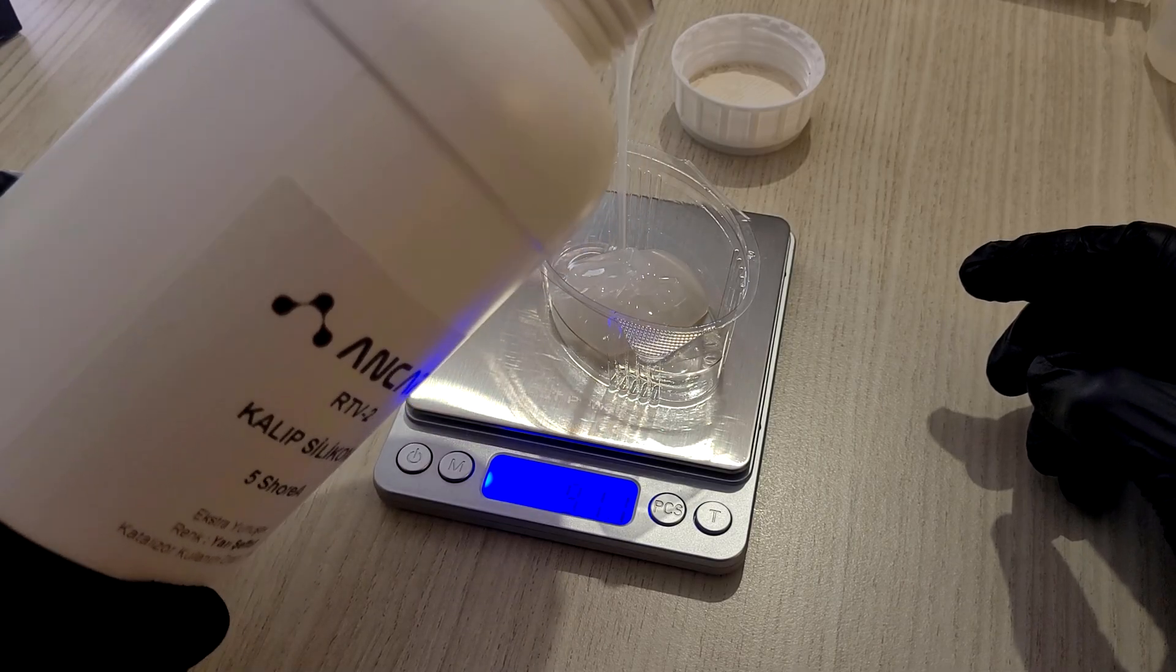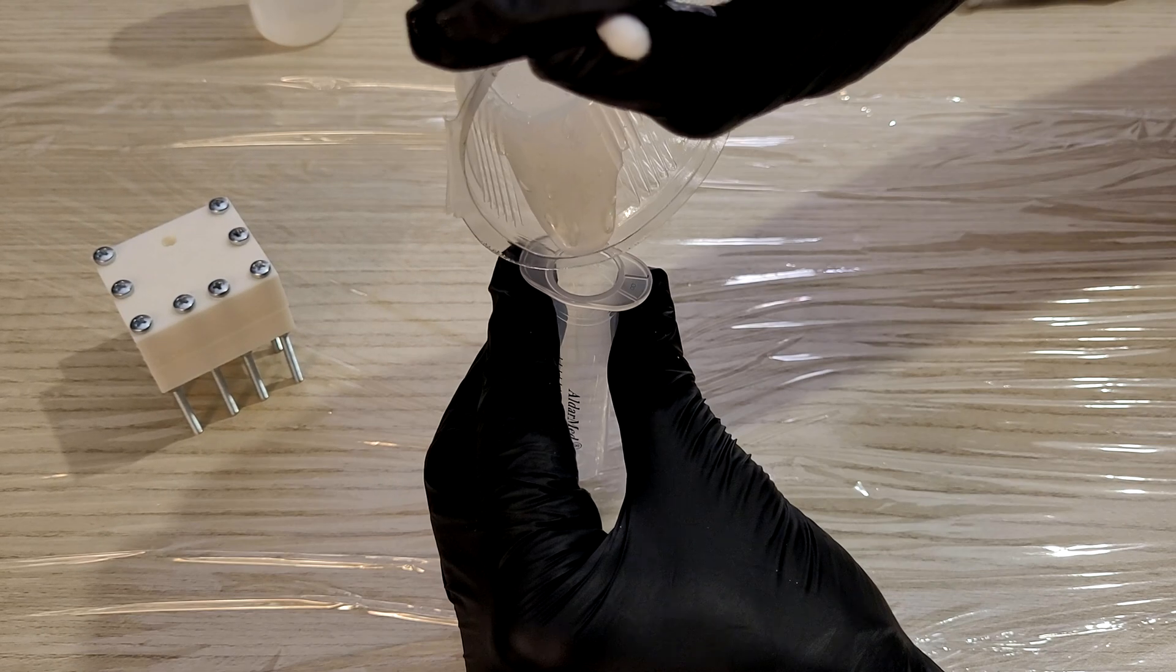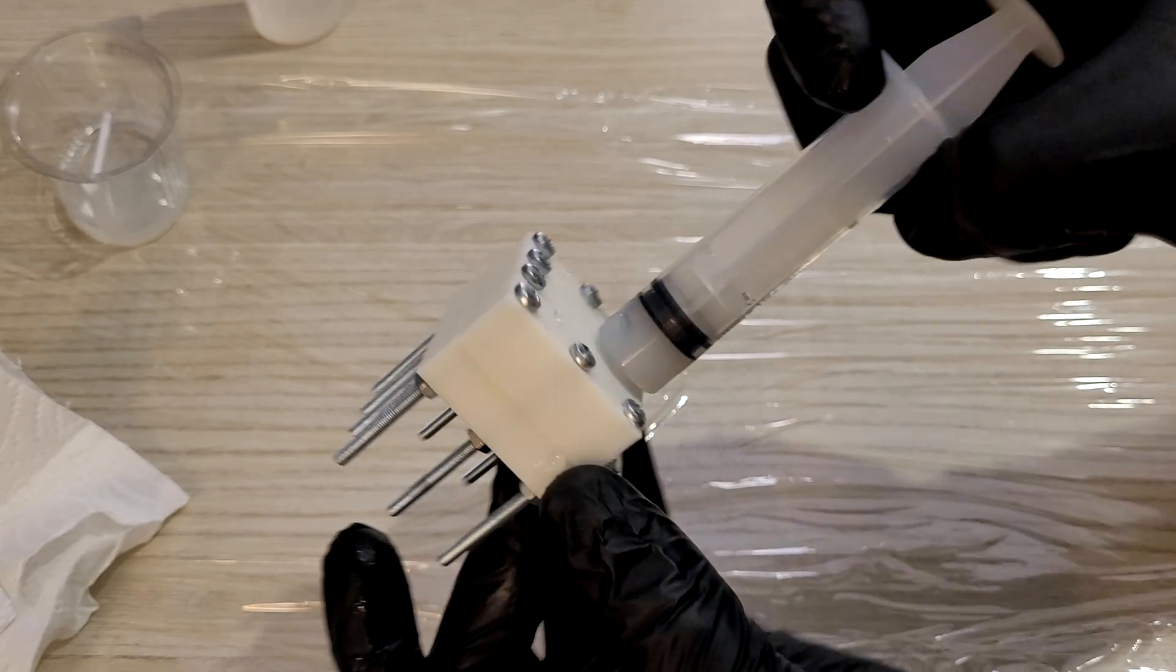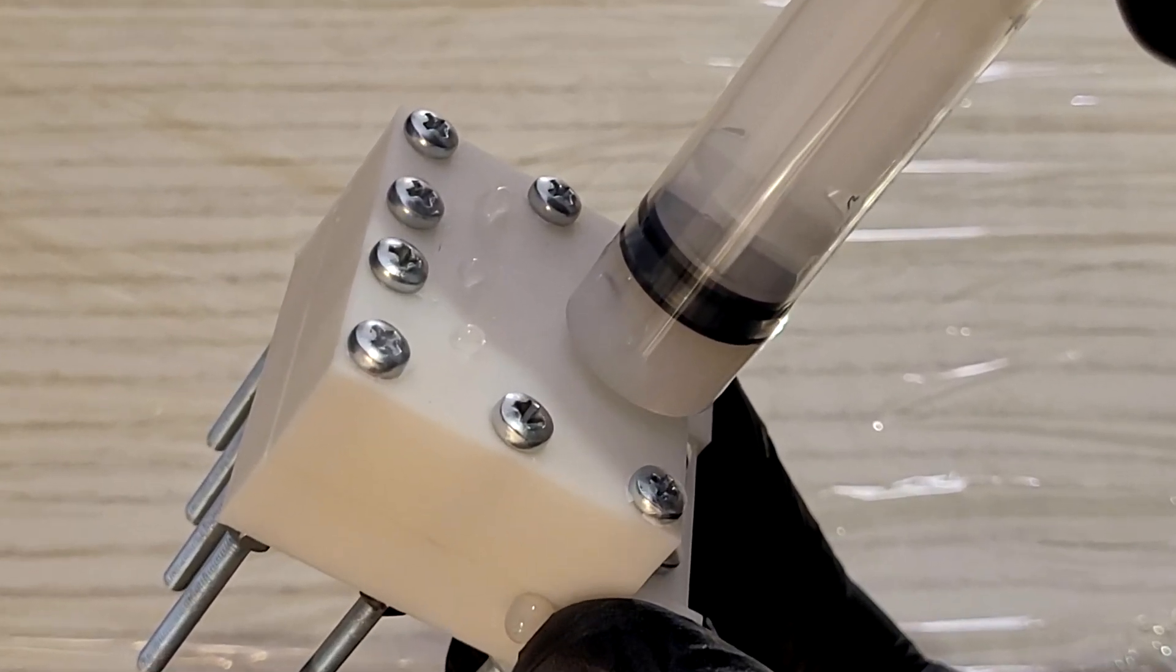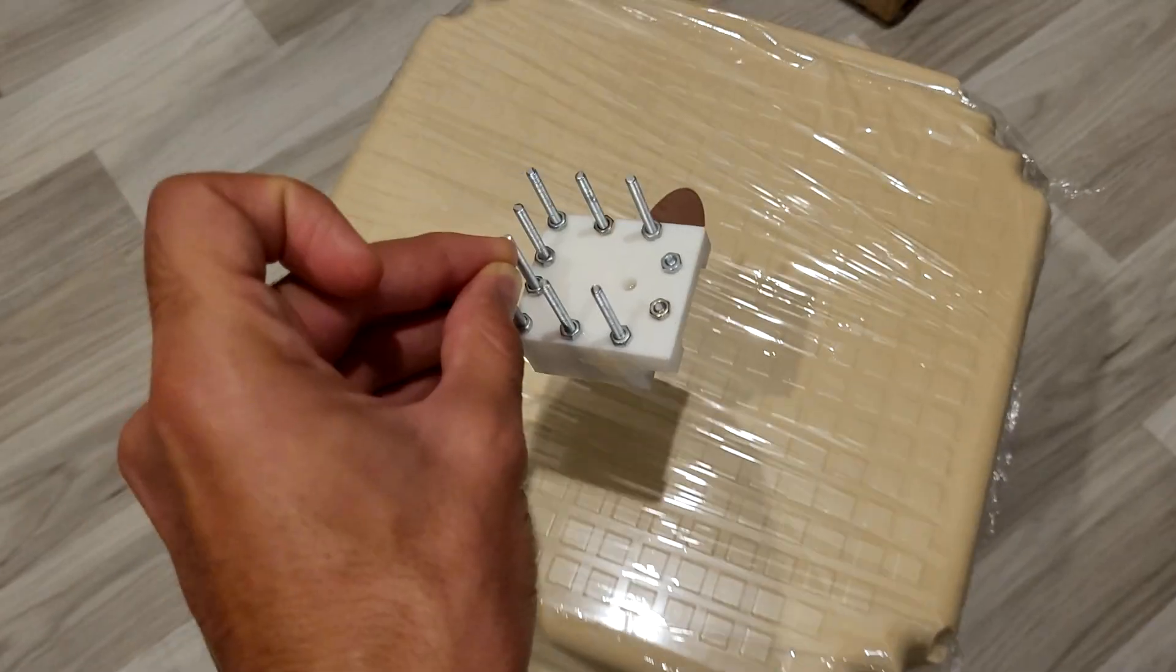Let's test it with the 3D printed mold. I'm measuring the silicon and mixing it. Then I pour it into the syringe. Hopefully, for the last time for a while. I assembled the mold already, so let's fill it. The viscosity is quite less compared to the caulk, so it flows much easier. Again, I'm filling it until it pours out of all the air vents. Then wiping it clean and leaving it to rest.